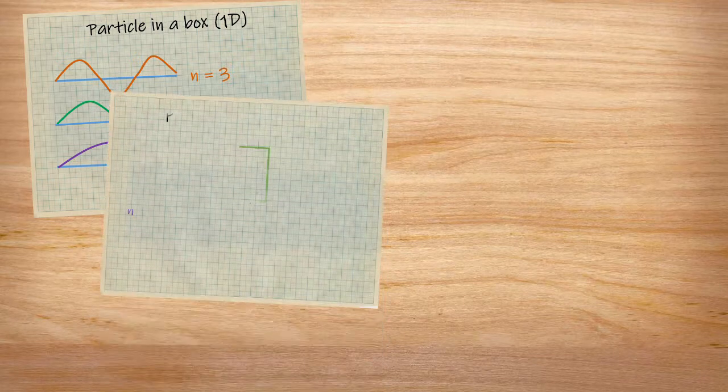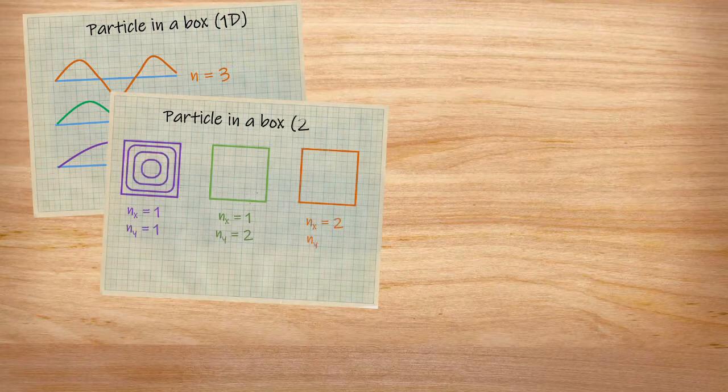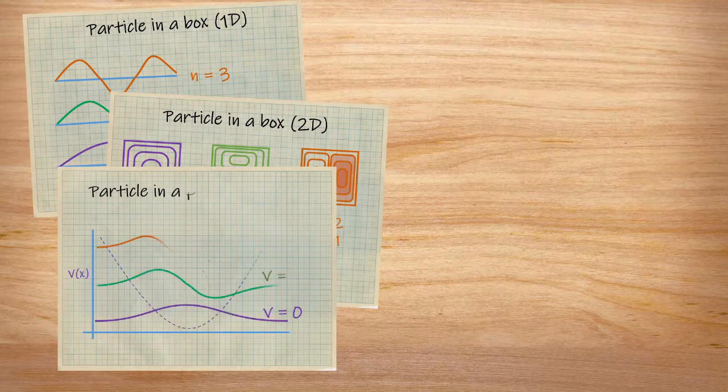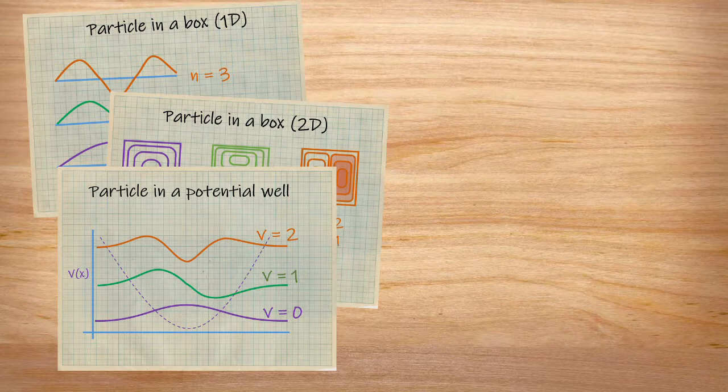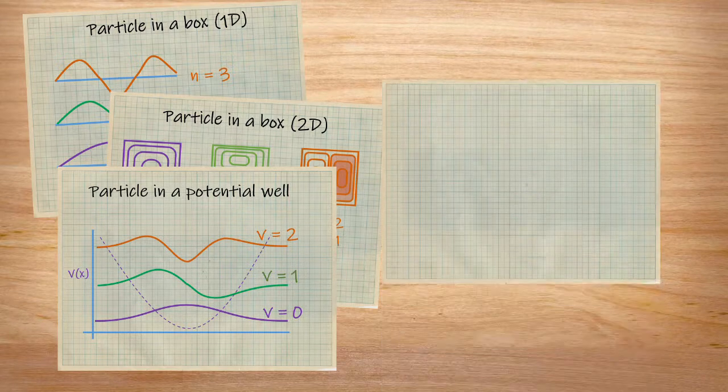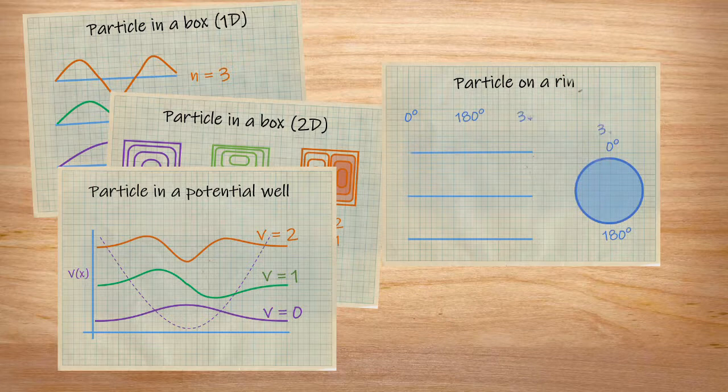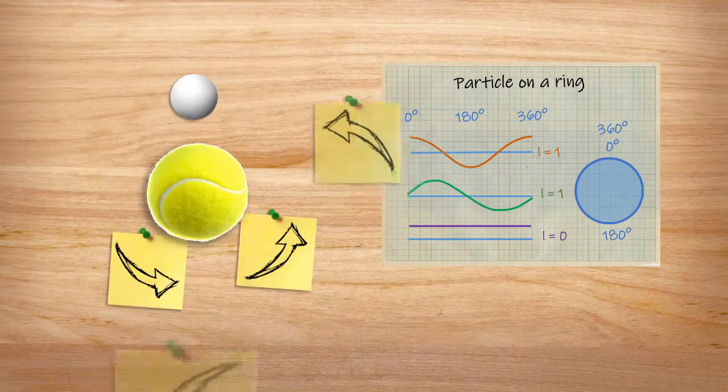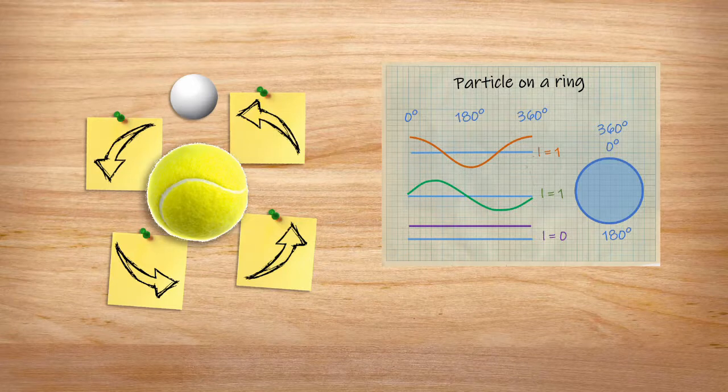We can then expand this model by adding new dimensions to show a 2D or 3D space. We can add a potential energy well, more on that one later. Or we can fiddle with the constraints a little. Instead of locking off the box at both ends, we can connect both ends to form a ring. This model is often used to develop quantized angular momentum in electrons, but it can really work for any particle that can be said to orbit another. That includes atoms, and so molecular rotations are also quantized.